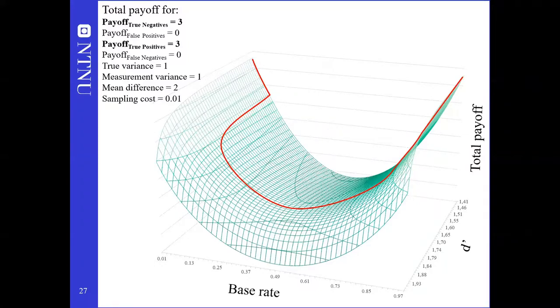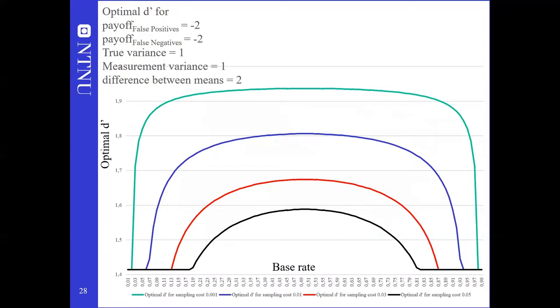To simplify the graph, let's look at only the optima. Here the optimal d' is charted across a large range of base rates. In this example, payoff is still symmetrical, though the different lines have different sampling costs. As we see for sufficiently low and high base rates, it's enough to sample minimally. Investment in further sampling is more often worthwhile for intermediate base rates. Both the range of base rates over which sampling is worthwhile and the optimal investment in sampling increase as sampling cost decreases.